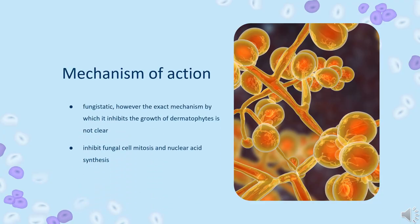Mechanism of Action. Griseofulvin is fungistatic; however, the exact mechanism by which it inhibits the growth of dermatophytes is not clear. It is thought to inhibit fungal cell mitosis and nucleic acid synthesis. It also binds to and interferes with the function of spindle and cytoplasmic microtubules by binding to alpha and beta tubulin. It binds to keratin in human cells, then once it reaches the fungal site of action, it binds to fungal microtubules, thus altering the fungal process of mitosis.